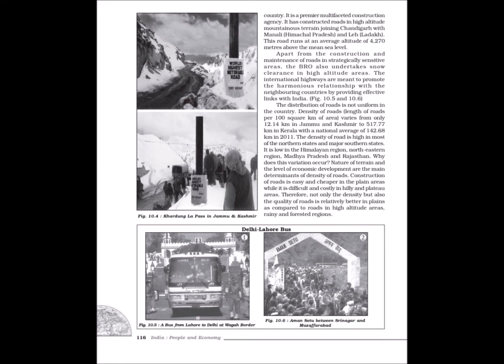International highways are meant to promote harmonious relationships with neighboring countries by providing effective links with India. The distribution of roads is not uniform across the country. The density of roads varies from only 10.48 km per 100 sq km in Jammu and Kashmir to 387.24 km in Kerala, with a national average of 75.42 km. The density of roads is high in most northern and major southern states, and low in the Himalayan region, northeastern region, Madhya Pradesh and Rajasthan.